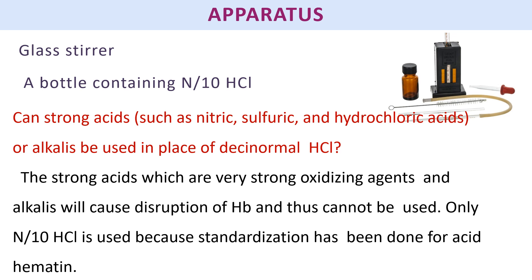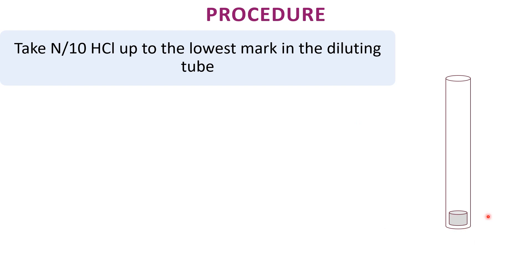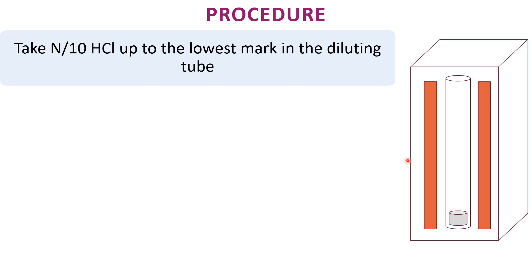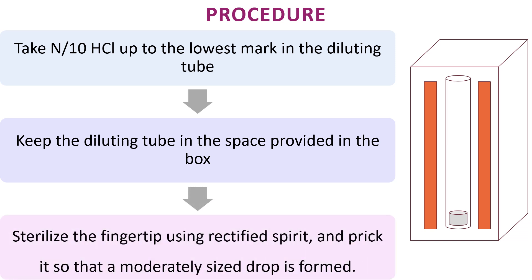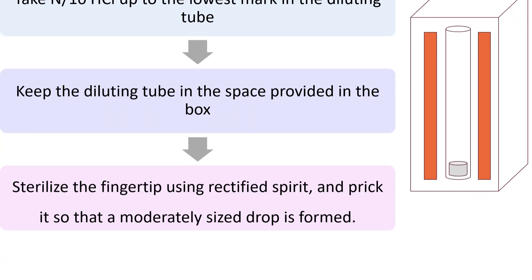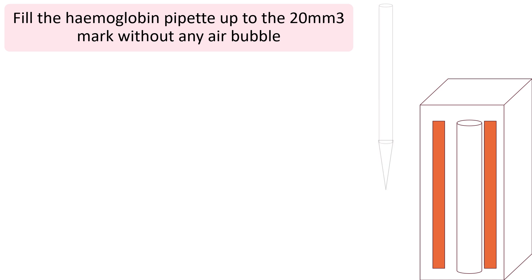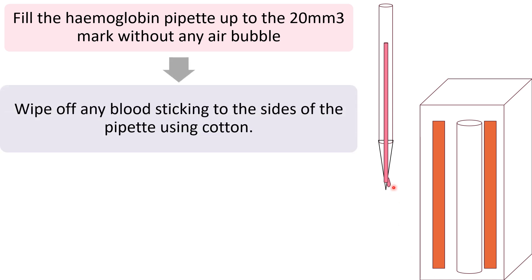The procedure: first, take N/10 HCl up to the lowest mark in the special diluting tube and place it on the comparator box. Then sterilize the finger with rectified spirit and prick it to form a moderately sized drop of blood. Fill the hemoglobin pipette up to the 20 mm³ mark without any air bubble.